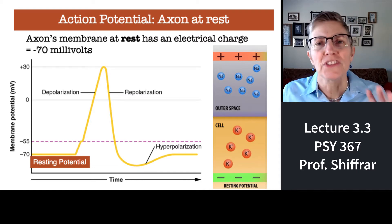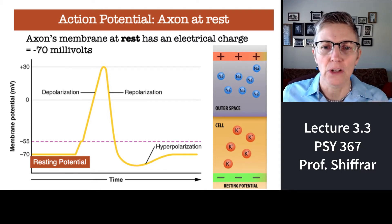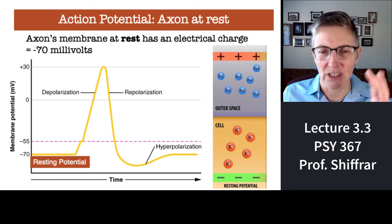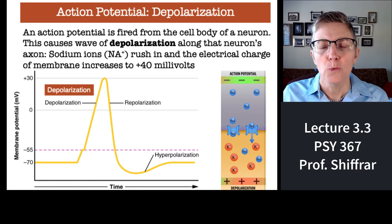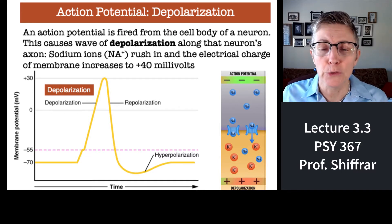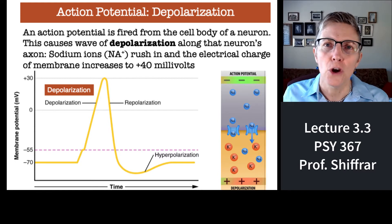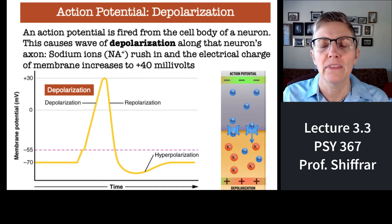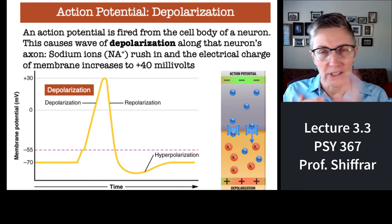When the neuron is just hanging around and then the cell body decides to fire an action potential, the action potential starts down the length of the axon. The axon becomes depolarized, which means it's not so negative anymore — in fact, it becomes positive, going up to positive 40 millivolts. That positivity comes from positive sodium ions rushing in to change the membrane potential.